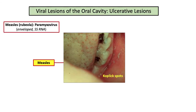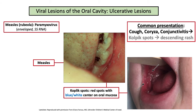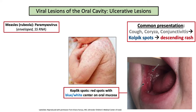Let's start with measles, also known as rubeola. This is a paramyxovirus which presents with a hallmark lesion in the mouth called Koplik spots. Koplik spots are commonly described as bright red spots with a blue-white center on the buccal mucosa. The classic presentation includes a child with a history of fever, cough, coryza, and conjunctivitis. This is followed by the appearance of Koplik spots on the oral mucosa, followed by the development of a descending body rash. Small irregular red spots on the buccal mucosa with a blue-white center appearing just before a descending body rash equals measles.